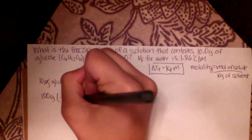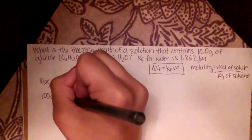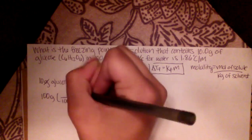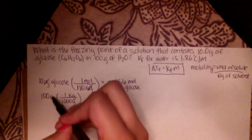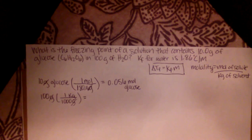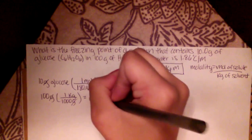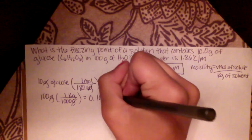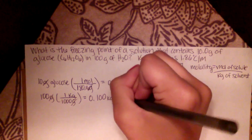Grams goes on the bottom, kilograms goes on top. There are 1,000 grams in 1 kilogram. So let's cancel our units. And we'll have kilograms. And then when we multiply this, we get 0.100 kilograms of water.